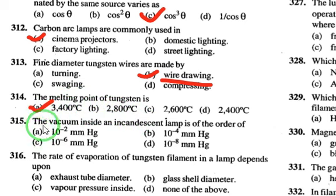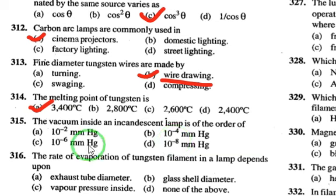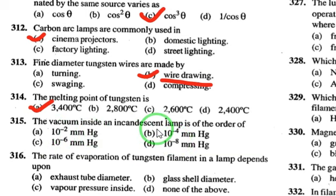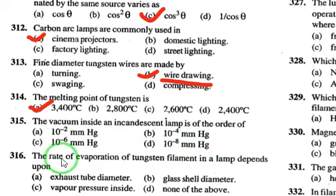The vacuum inside an incandescent lamp is of the order of 10⁻⁸ mmHg, so option D is the answer.